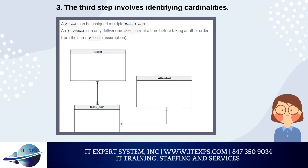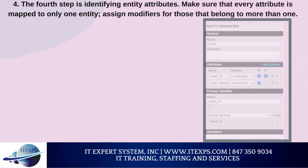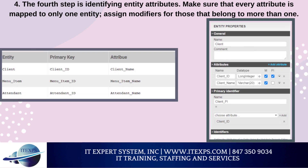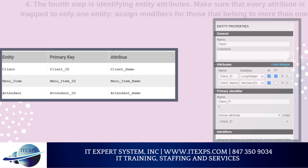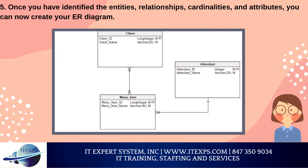A client can be assigned multiple menu items. An attendant can only deliver one menu item at a time before taking another order from the same client. The fourth step is identifying entity attributes. Make sure that every attribute is mapped to only one entity; assign modifiers for those that belong to more than one. Specify the primary key for each entity by using the most uniquely identifying attributes. Once you have identified the entities, relationships, cardinalities, and attributes, you can now create your ER diagram. Here's what our sample project will look like when designed using the crow's foot notation.